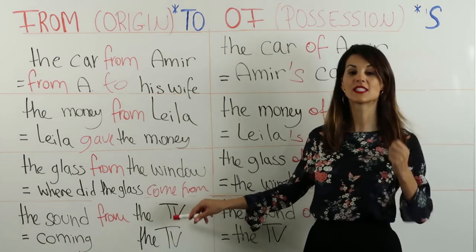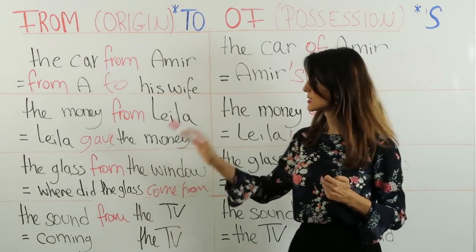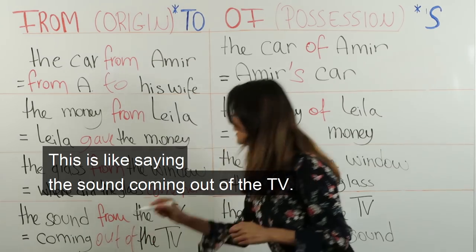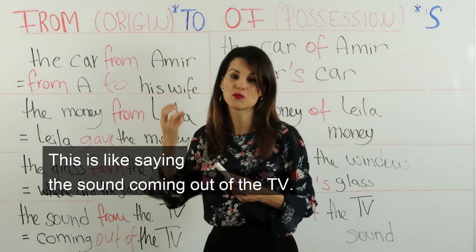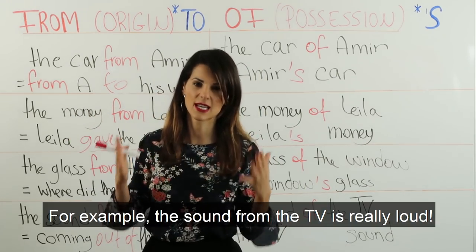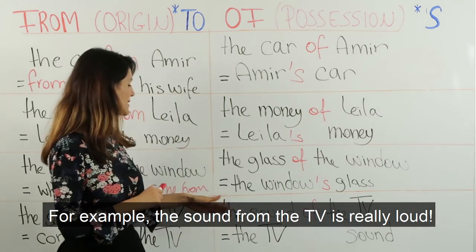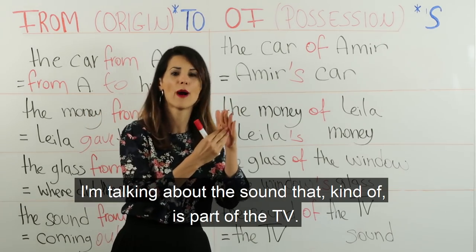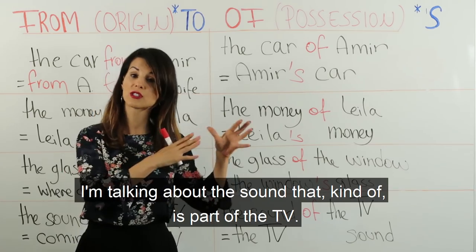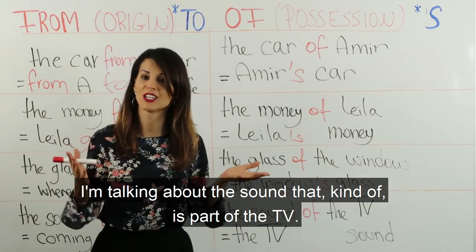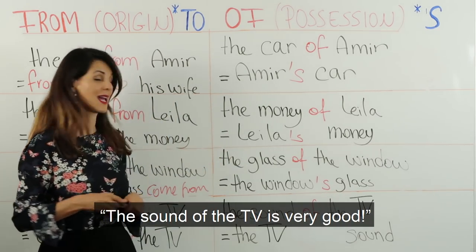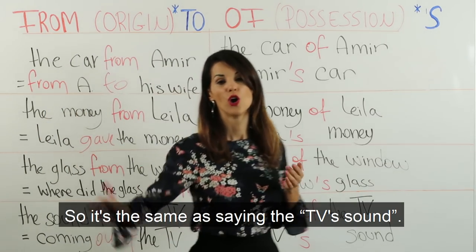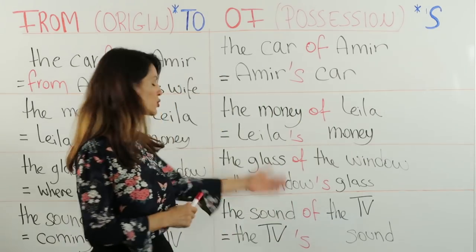Last example for this set: 'The sound from the TV.' السوت من التلفزيون. This is like saying the sound coming out of the TV. For example, 'the sound from the TV is really loud.' Whereas if I say 'the sound of the TV', I'm talking about the sound that is part of the TV. هون مش عمقول الصوت اللي خيرج — فعلاً عموصف صوت التلفزيون. 'The sound of the TV is very good.' So it's the same as saying 'the TV's sound'. صوت التلفزيون.